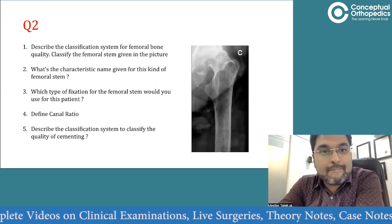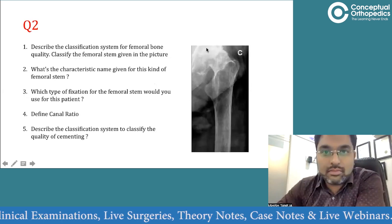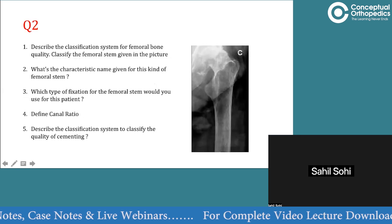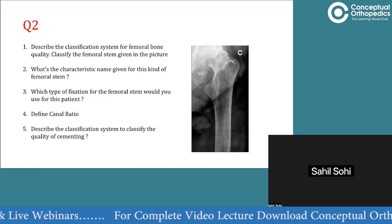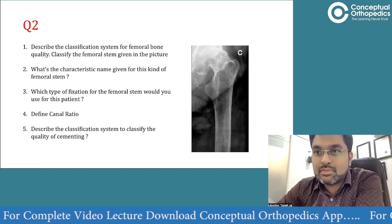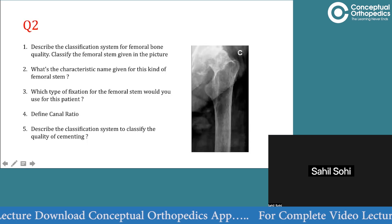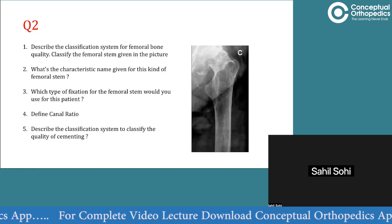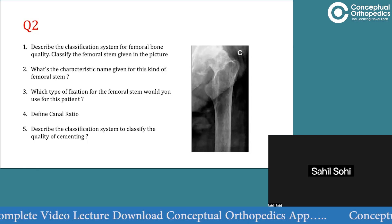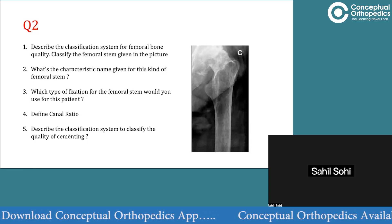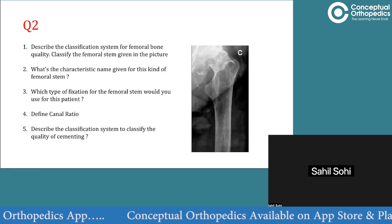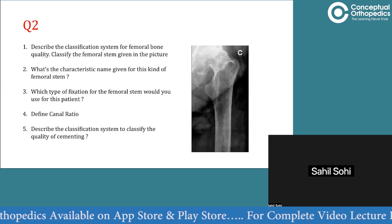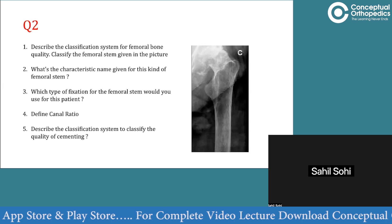Moving to the next question, a volunteer - Sahil Sohi - answers. It is a classification system for femur bone: the Dorr classification, which has three types. Type A has a thicker cortex with a smaller medullary cavity. Type B shows thinning of the cortex has started. Type C has very thin cortex and a large medullary cavity. This femur stem is Dorr type C because the cortex is very thin and the medullary canal is large.